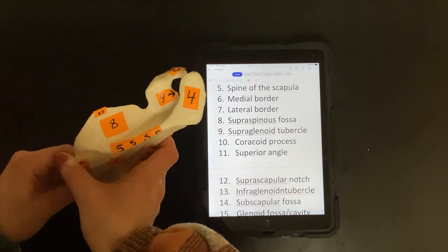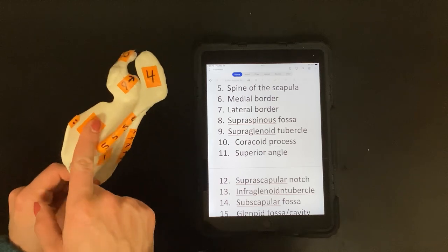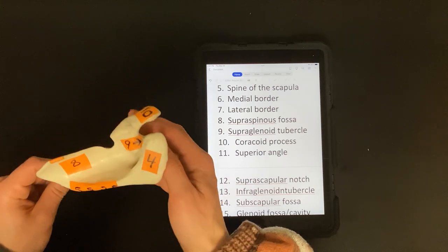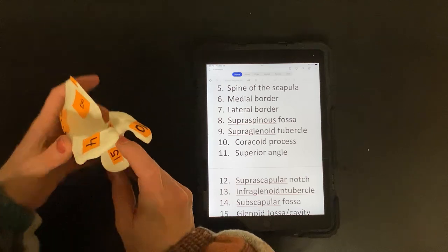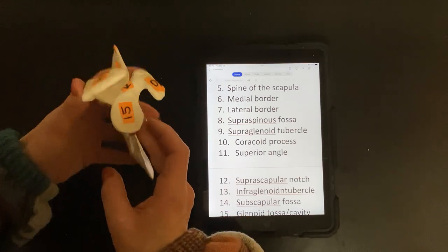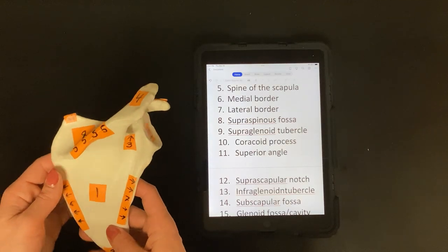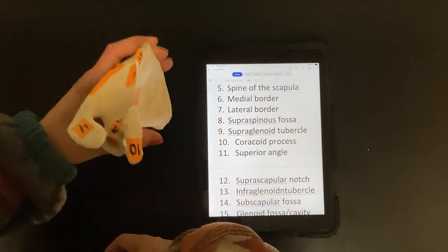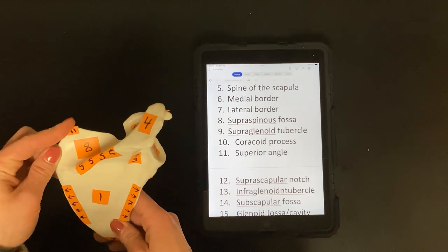Eight, this is your supraspinous fossa. Nine is going to be your supraglenoid tubercle. Ten is your coracoid process. Eleven is your superior angle.